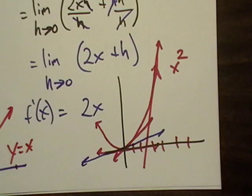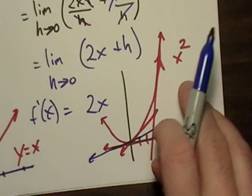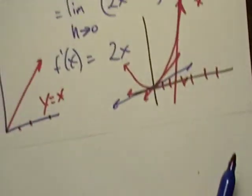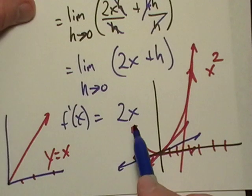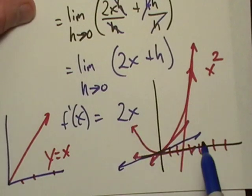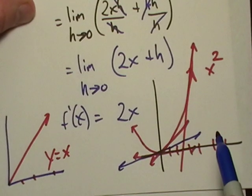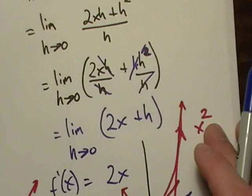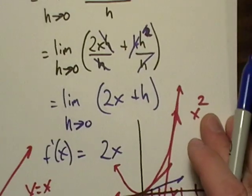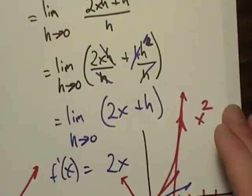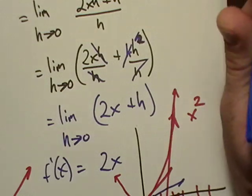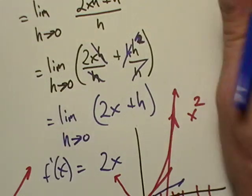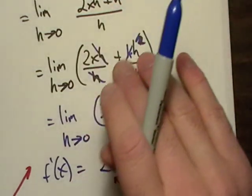I encourage you to go ahead and experiment a little bit. Take f of x equals 2x, graph that function, and if you just put in whatever x value you're interested in at that particular point, then you'll have the derivative.